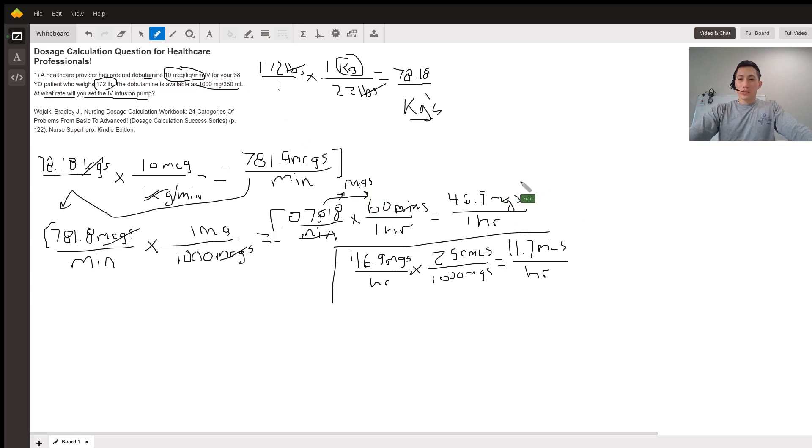We're still not quite there. This is milligrams, but we want milliliters. We take our concentration, 1,000 milligrams per 250 milliliters, and multiply it out. So 46.9 milligrams per hour times 250 milliliters over 1,000 milligrams. We cross out milligrams—milligrams on top, milligrams on bottom. We end up with 11.7 milliliters per hour.